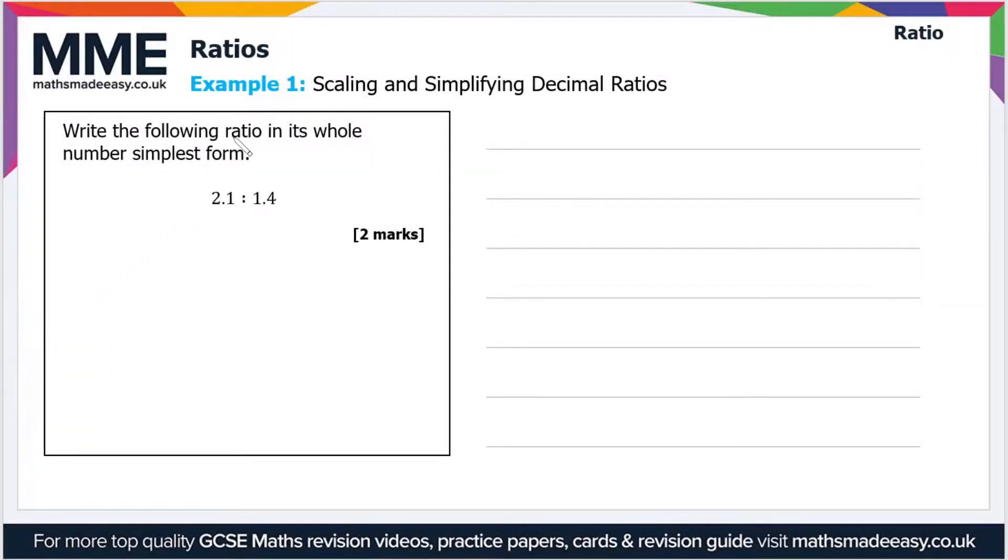Welcome to the Maths Made Easy tutorial on ratios. In this video we'll just go through a couple of exam style example questions. So the first one then: write the following ratio in its whole number simplest form. So the ratio we have is 2.1 to 1.4.